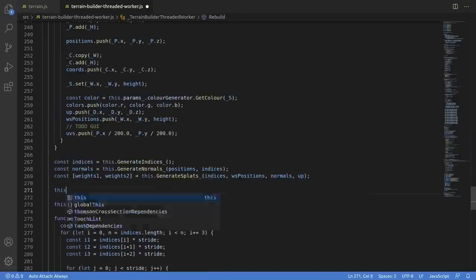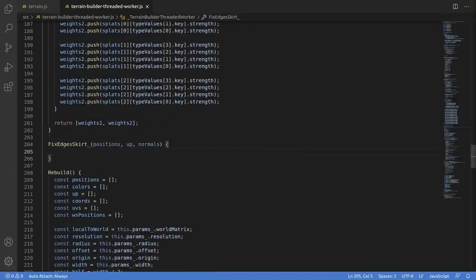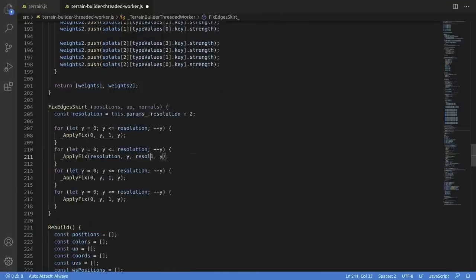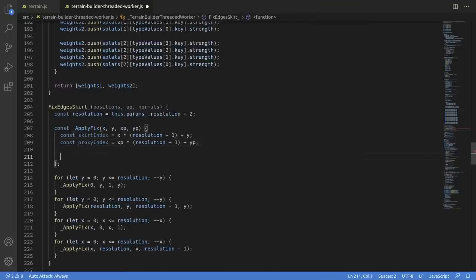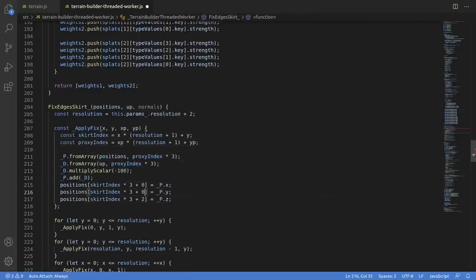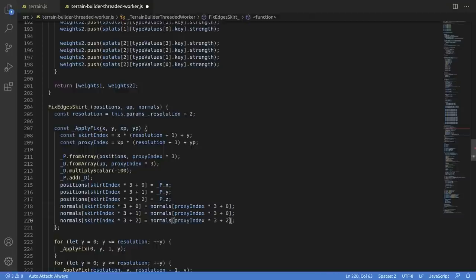The code for the skirt itself is dead easy. We're just going to go into the mesh generation code and add an extra layer of vertices around the edge. You generate the normals off of that, which should smooth them out between chunks. And then you need to do a pass where you pull these vertices down, effectively creating a skirt.